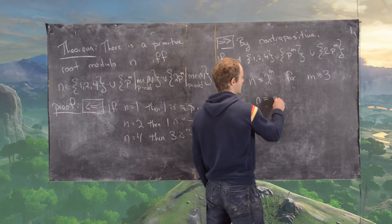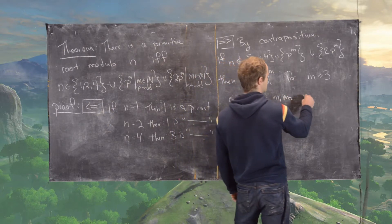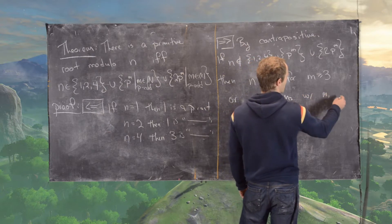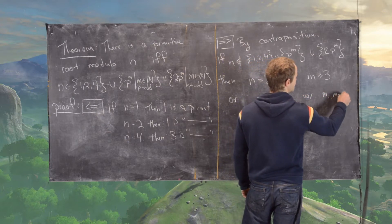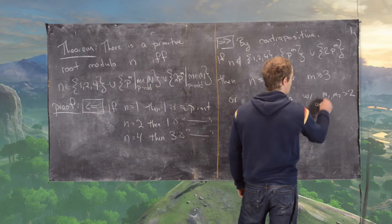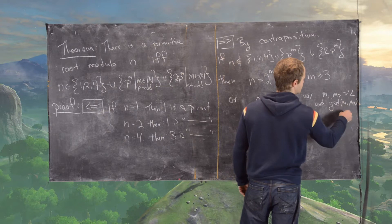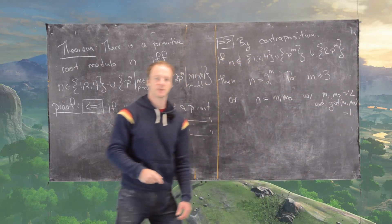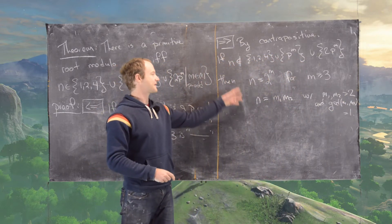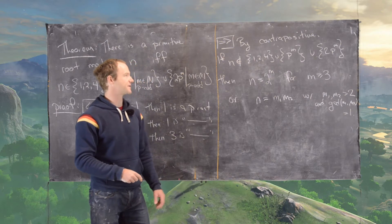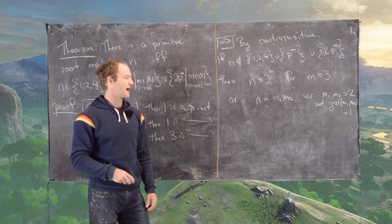Or n equals m1 times m2, with m1 and m2 both greater than 2, and the GCD of m1 and m2 equals 1. And so it's pretty easy to check that these are the only two possibilities for n if n is not in that set.